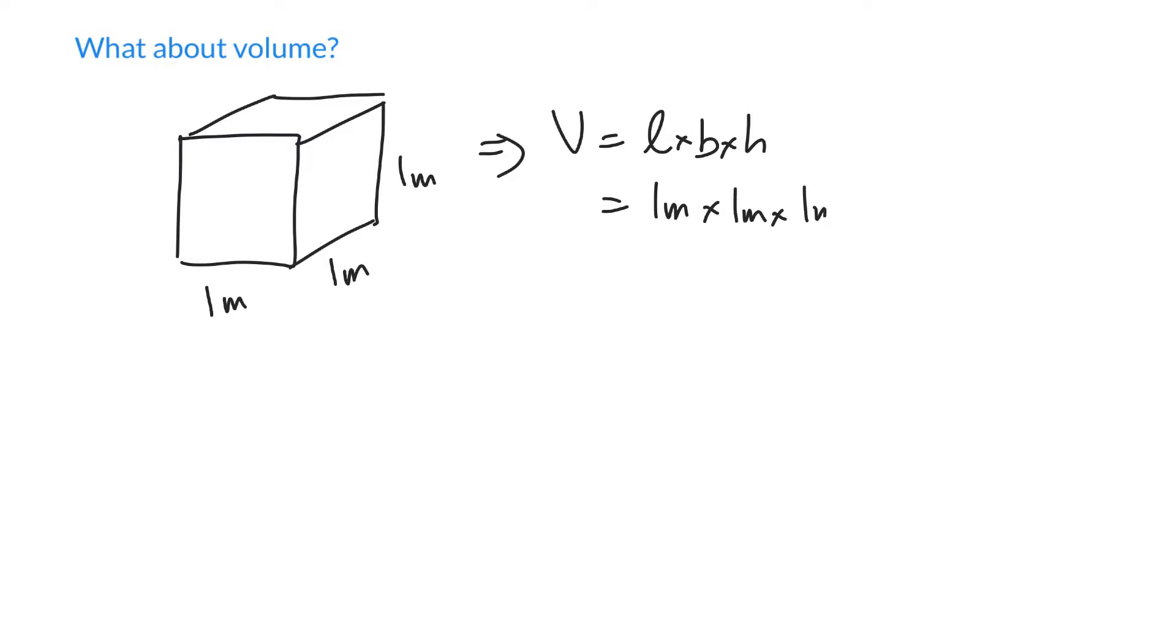So one meter times one meter times one meter, and when we multiply these out, we multiply the numbers. So one by one by one is just one, and meter times meter times meter we could write m times m times m, but we normally write m to the third power or m cubed.